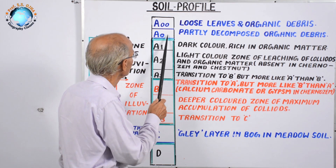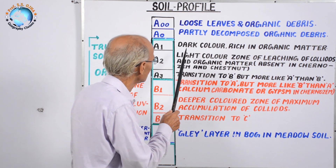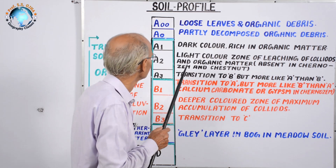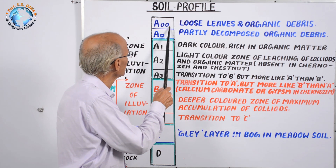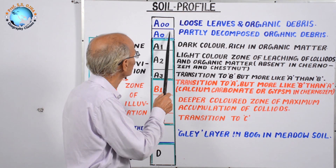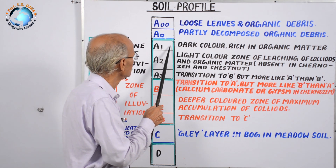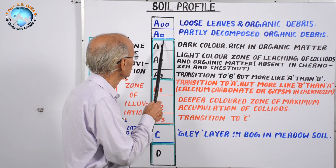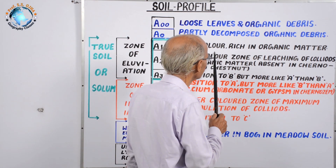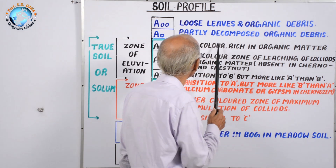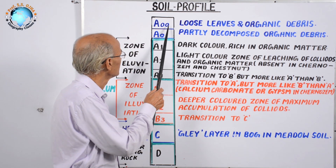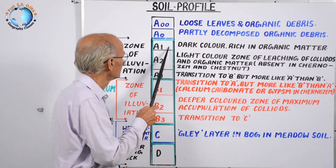Below A0 is the A1 layer, which is dark in color and rich in organic matter. The dark color is because rainwater carries down decomposed chemicals and physical particles downward, depositing them in the A1 layer. The organic matter in A1 is brought down from A00 and A0 by rainwater or any water movement.